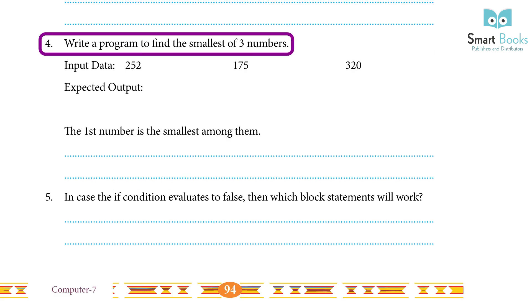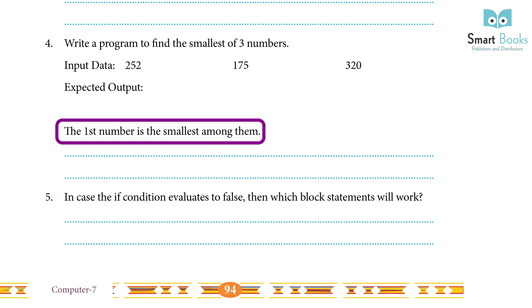4. Write a program to find the smallest of three numbers. Input data: 252, 175, 320. Expected output: The first number is the smallest among them. Answer: Ask students to do it by themselves.